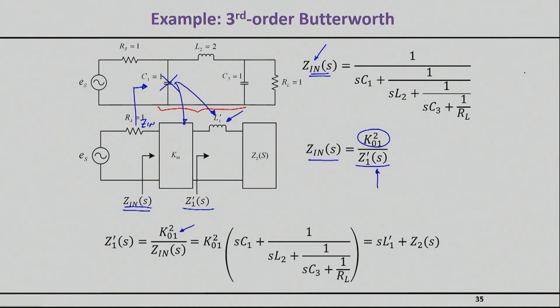If you just do the math and you basically bring the value of Z_in from up here, then you will realize that the first term is nothing else but the coupling section square times sC1. Essentially we have just by inspecting this equation successfully turned this shunt component to a series one, which here I have written as L1 prime, provided that I make that K01 square times C1 is equal to L1 prime.